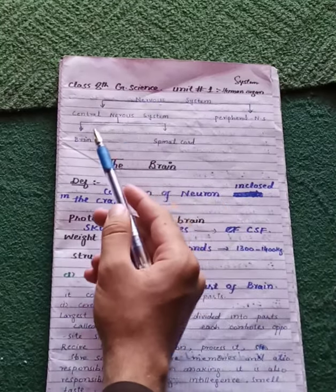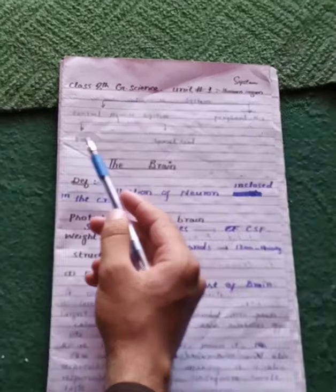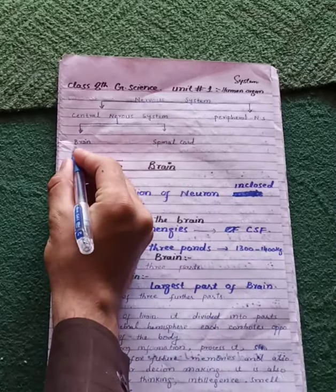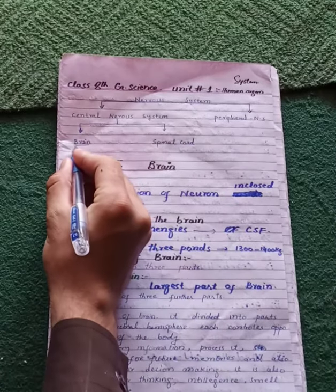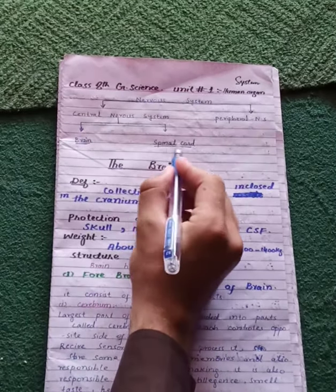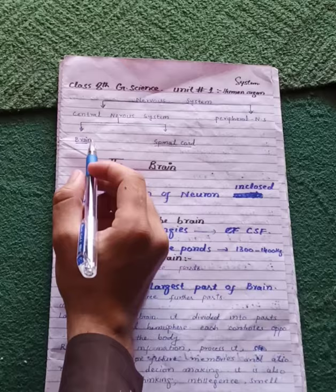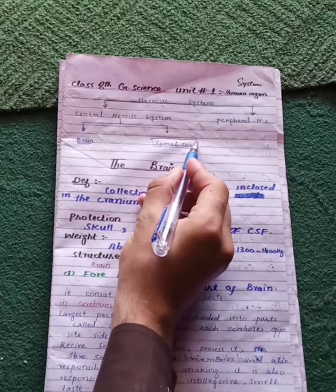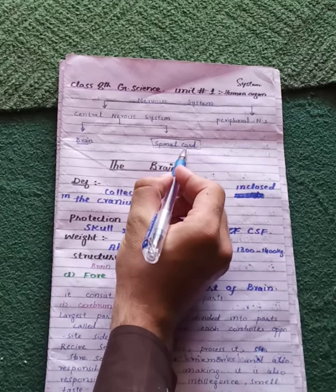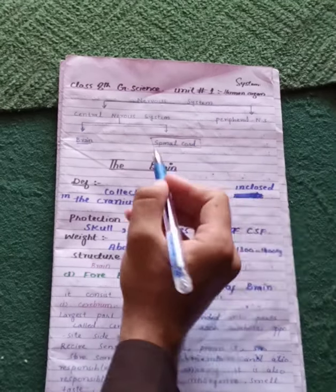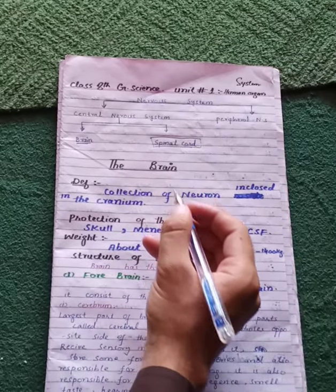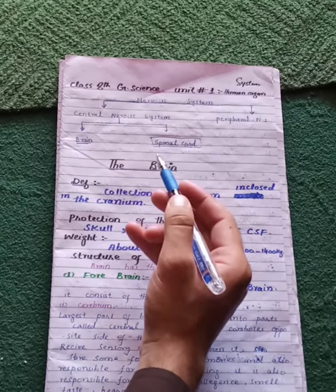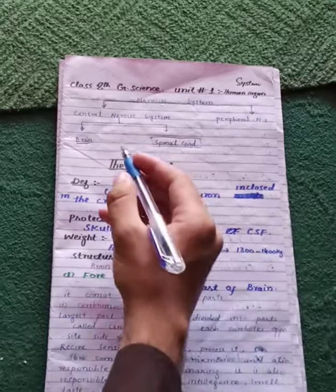The Central Nervous System is further divided into two parts: the Brain and the Spinal Cord. We will cover the spinal cord and its structure in the next lecture. For now, we will discuss the brain and related topics.